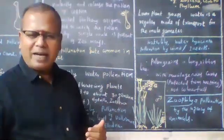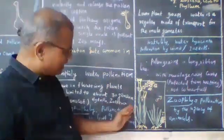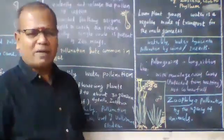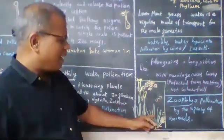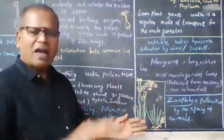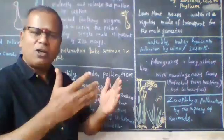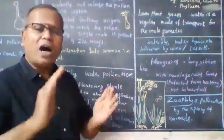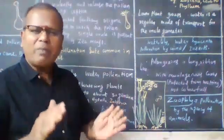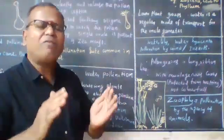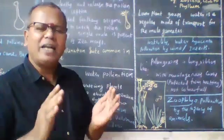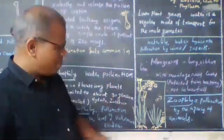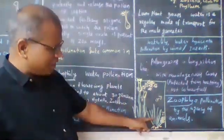Vallisneria is a dioecious plant, meaning male and female flowers are present on two different plants. In Tamil, we call this 'unmalar and penmalar' — male and female flowers on separate plants.